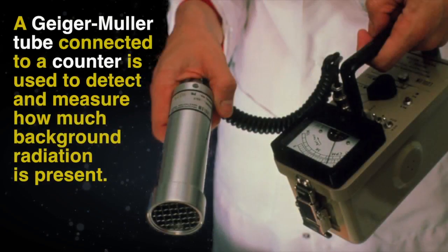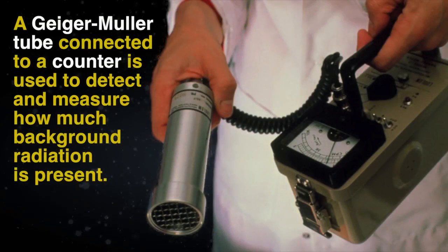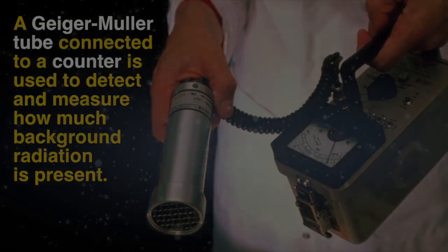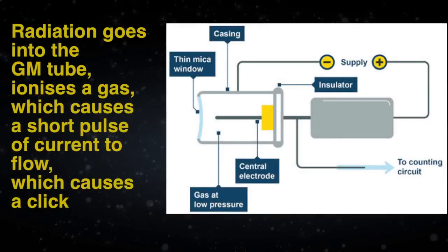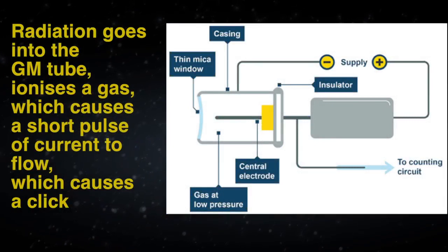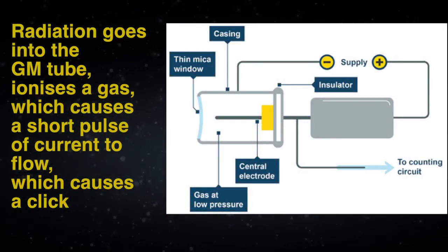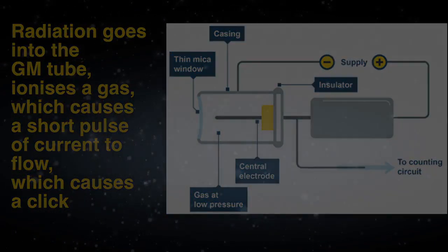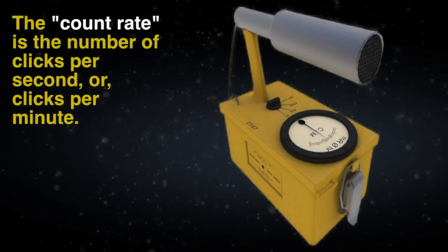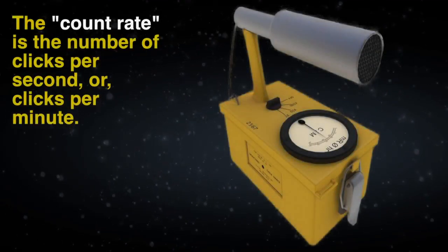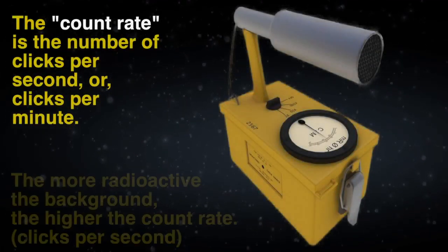How is radioactivity detected and measured? The Geiger Muller tube connected to a counter is used to detect and measure how much background radiation is present. Radiation goes into the Geiger Muller tube, ionises a gas, which causes a short pulse of current to flow, which causes a click. The count rate is the number of clicks per second or clicks per minute.